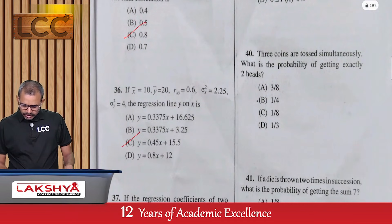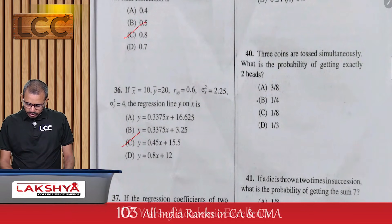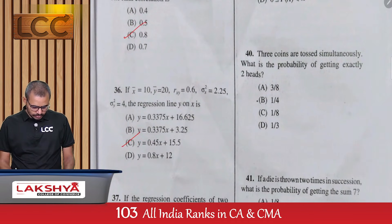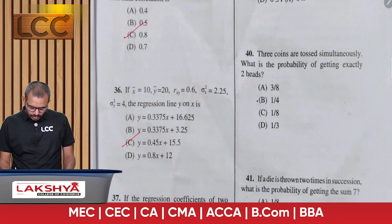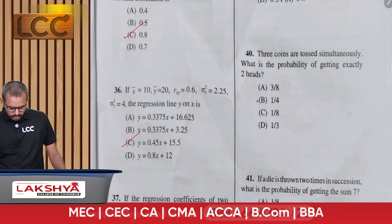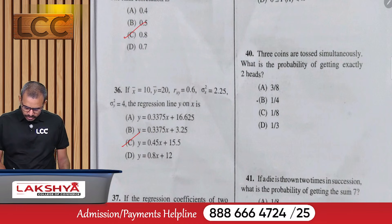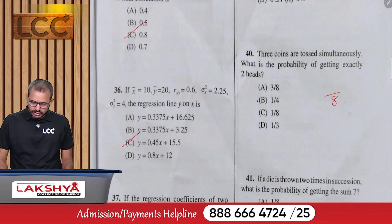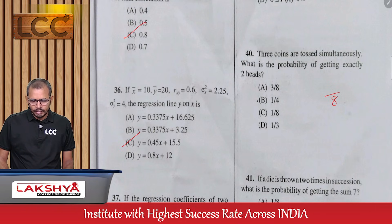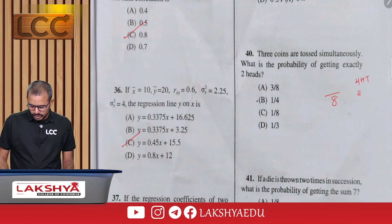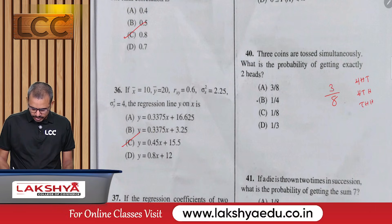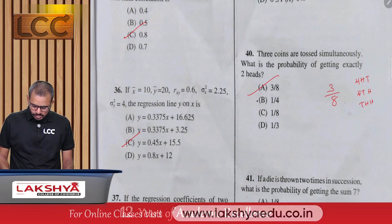Question 40: Three coins are tossed simultaneously. Find the probability of getting exactly two heads. The possibilities are HHT, HTH, THH — that is 3/8 — option A.